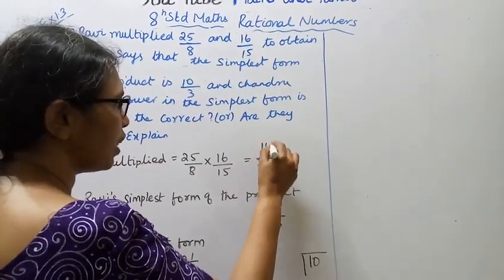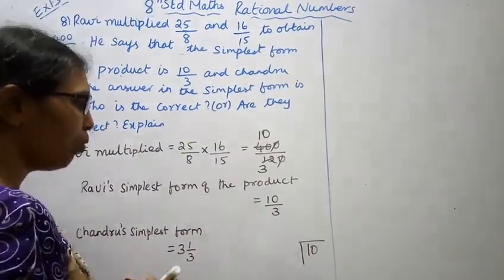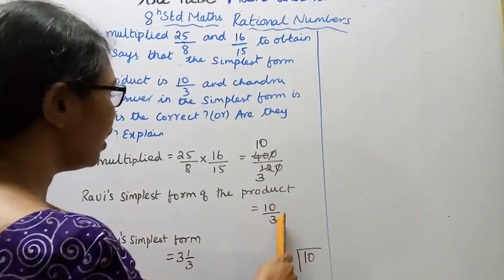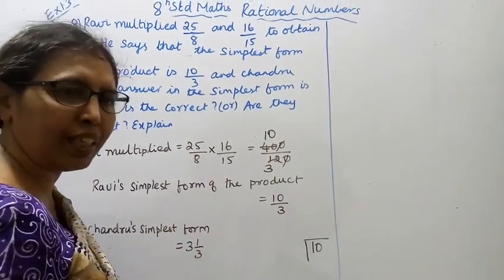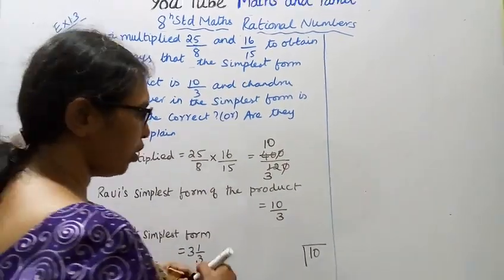After canceling, we get 10 by 3. Chandru says the simplest form is 3 1 by 3. This is another form of 10 by 3.